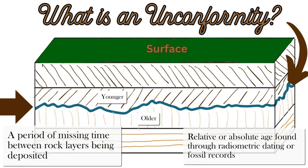If you dig down in the Earth's crust, let's say with a canyon or a mine, or you have a river that exposes the canyon walls like with the Grand Canyon, you might find a point on the canyon wall where there are two rock layers and a division that is not parallel, smooth, or horizontal — it is jagged and uneven. This could be an unconformity.